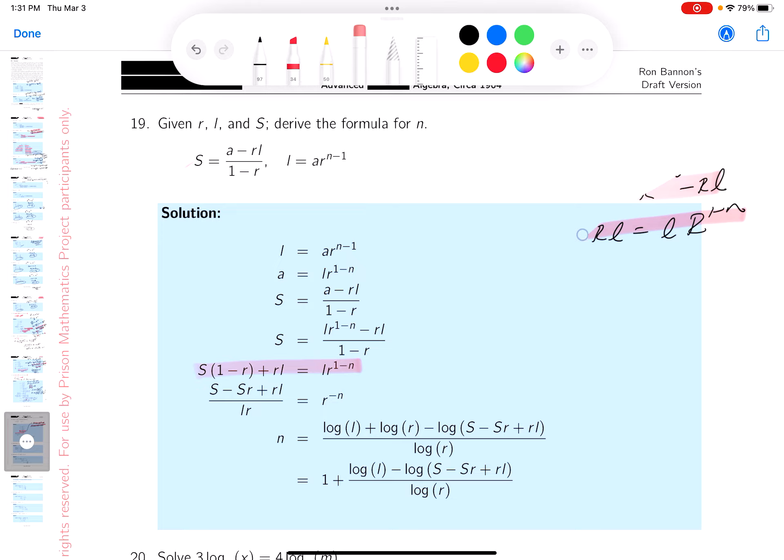Now, again, I'm looking at my nicely, neatly typed up solutions to this thing. The next thing I would do is I'd rewrite this. And the way I'd write this, I'll write this down for S(1 minus r) plus rl. And I'd write this as L times r, because there's one r there, and r to the minus n.